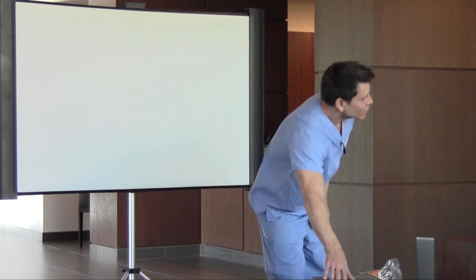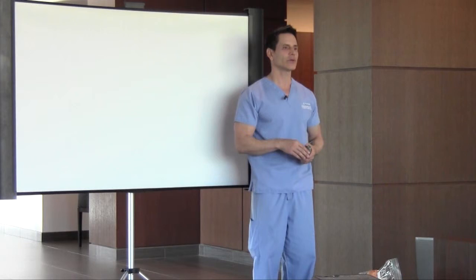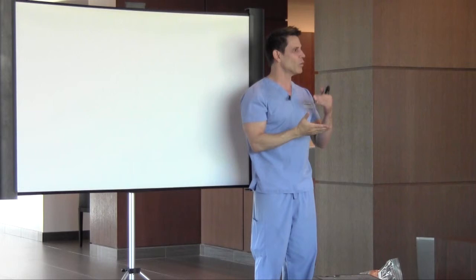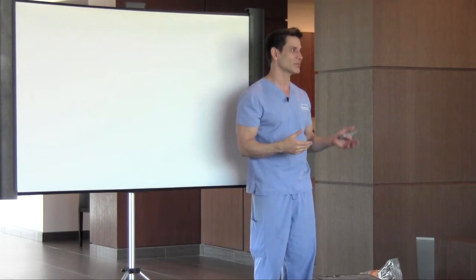After a hair transplant, there's a period where you can traumatize the hairs and get shock loss from surrounding hairs that were already there, so those may fall out too. It's about one to three months for the transplanted hairs to take root, then they fall out, and then they start to regrow. It takes about six months to a year before you actually see the hairs.